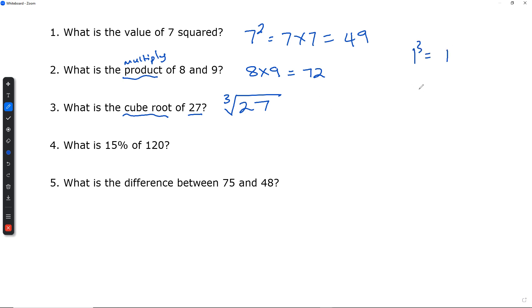1 cubed is 1. 2 cubed is 2 times 2 times 2, which is 8. 3 cubed is 3 times 3 times 3, which is 27. 4 cubed is 4 times 4 times 4, which is going to be 64.